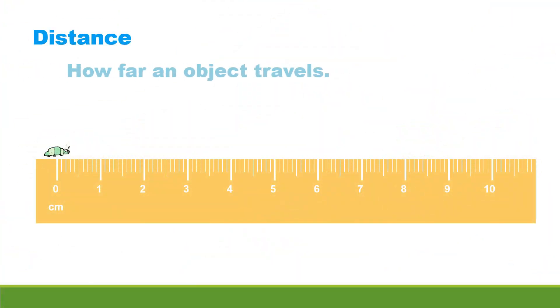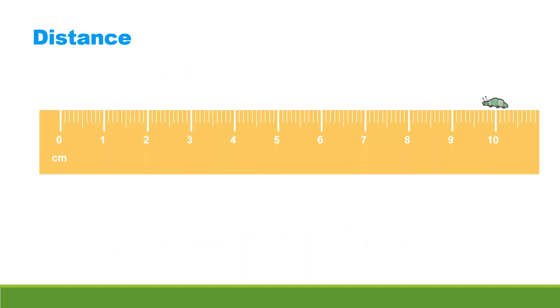Distance is how far an object travels. Look at the bug. What distance did the bug travel? If it's seven centimeters, then you're correct! Observe again our bug. Now what distance did the bug travel? If it's five centimeters, then you're correct!